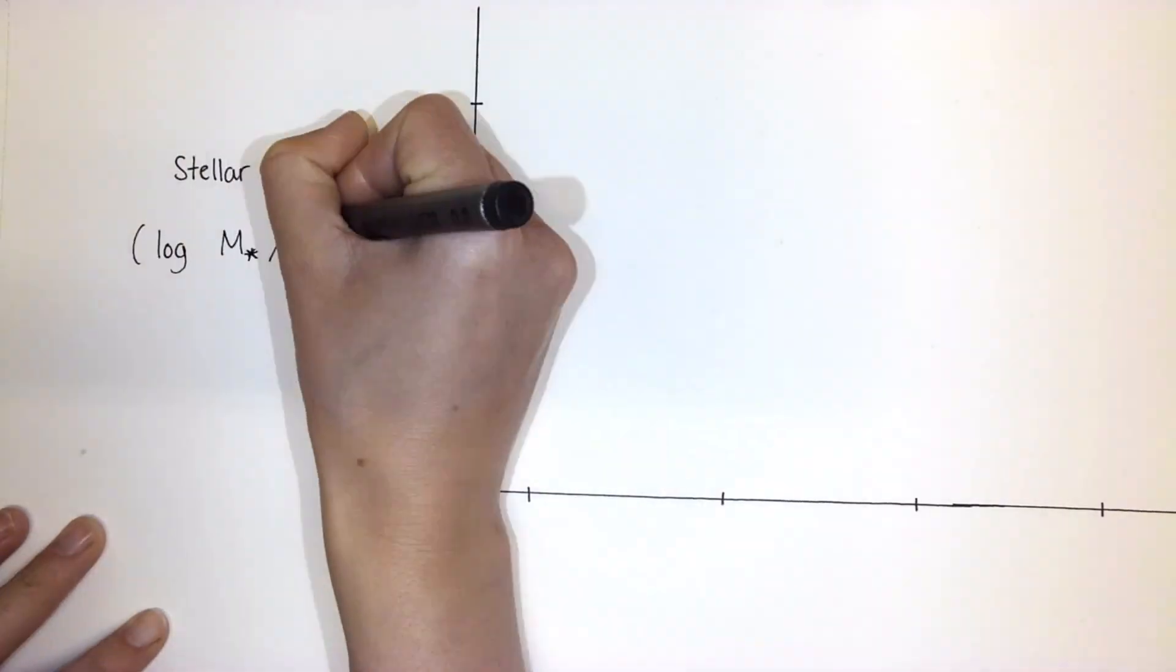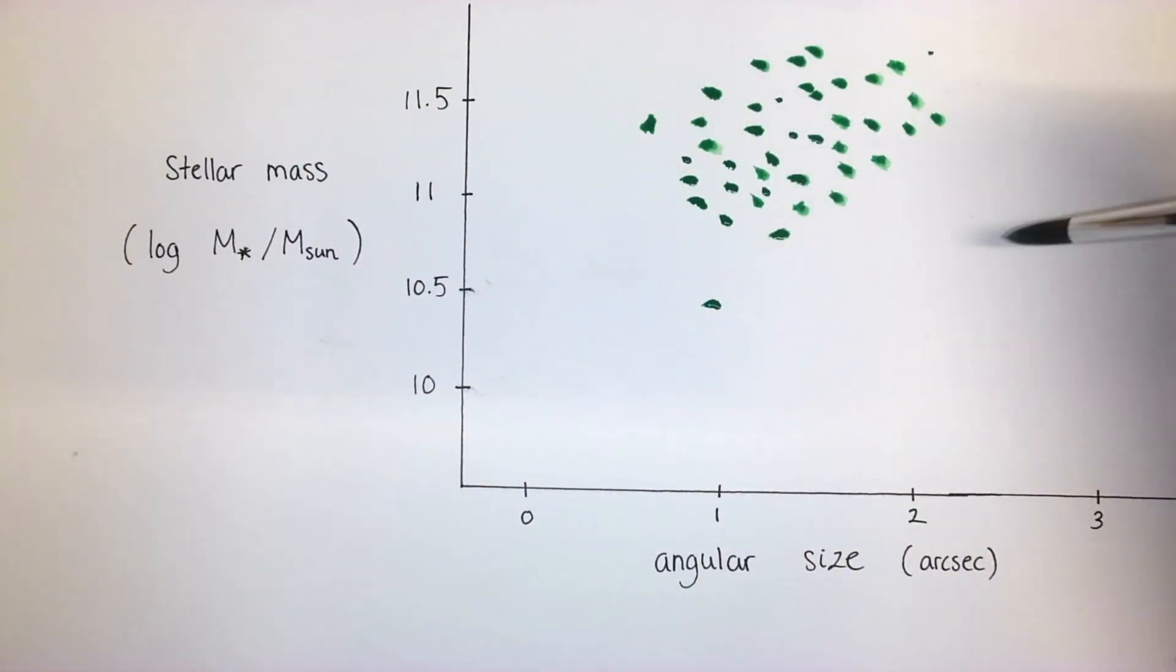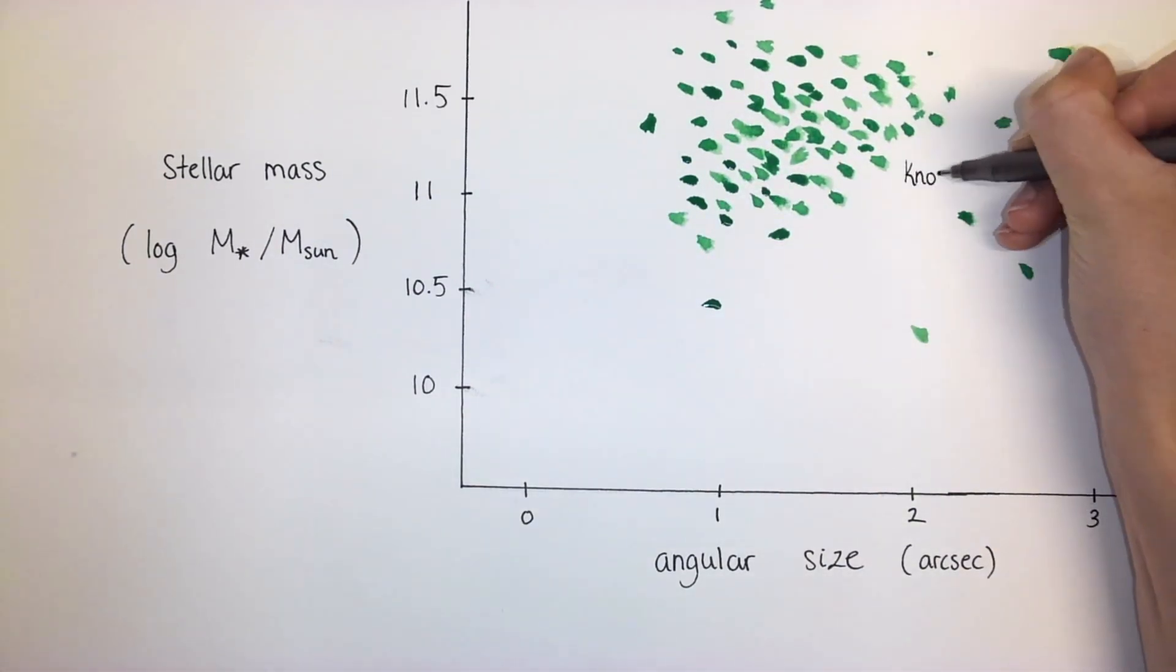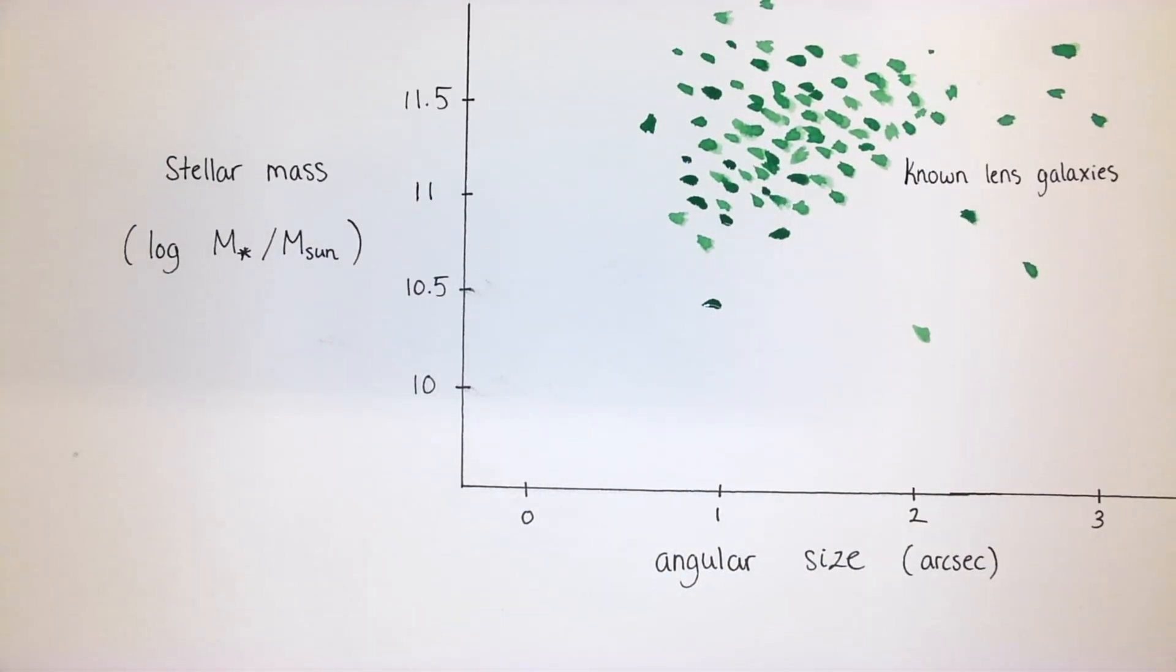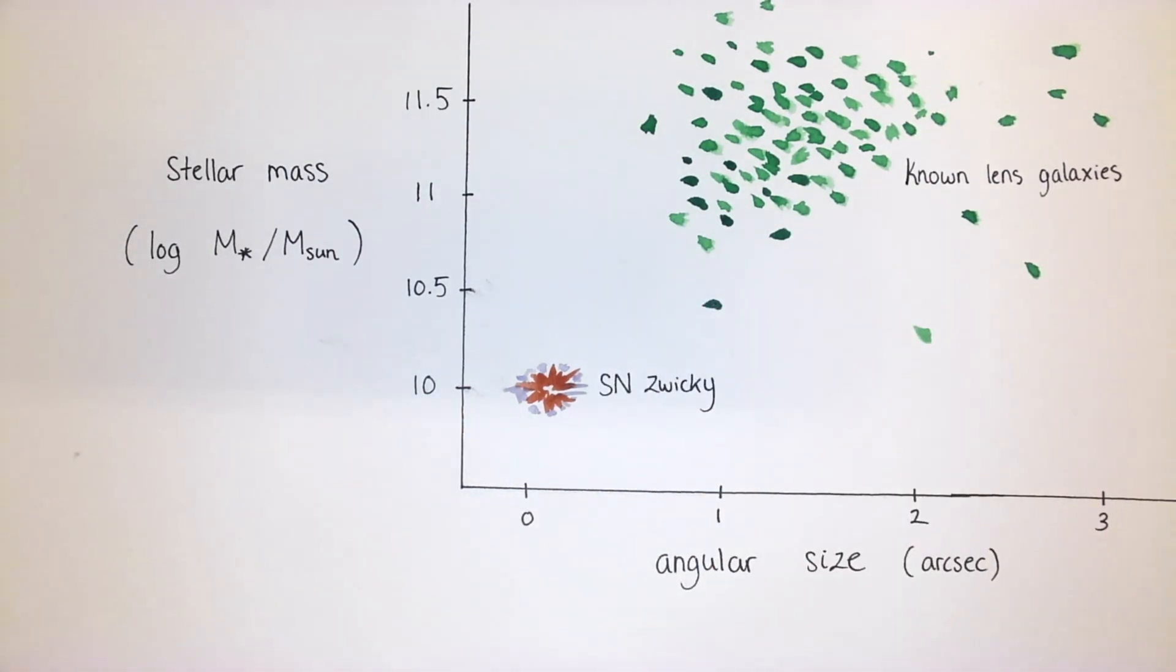Compared to other known lens galaxies, the galaxy that lensed Supernova Zwicky turns out to be a special one. It's much smaller and lighter than any lens galaxies we've encountered so far. This diagram shows the masses and angular sizes of known lens galaxies, and it shows that Supernova Zwicky is an outlier.